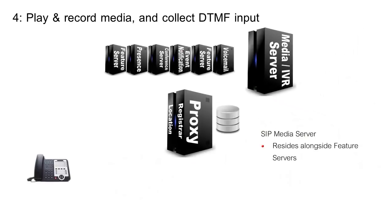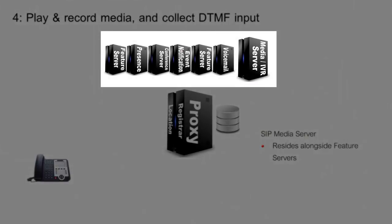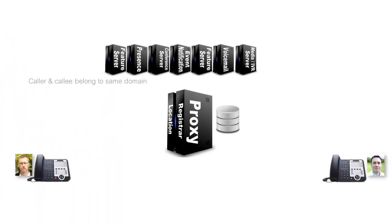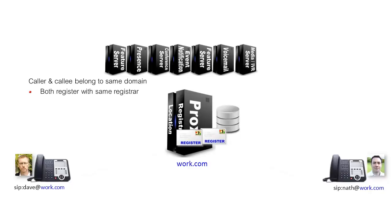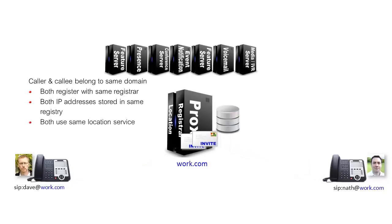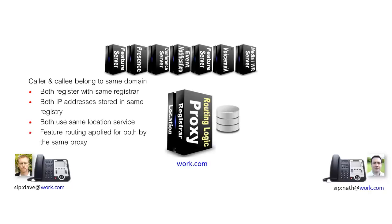The media server sits typically alongside the set of feature servers. It's a reusable component that provides recording, playback, and DTMF collection for all the feature servers, meaning they don't have to do it themselves. In our scenario so far, caller and callee both belong to the same domain — work.com. They both register with the same work.com registrar, IP addresses for both are stored in the same registry, both use the same location service, and feature routing is applied by the same work.com proxy.